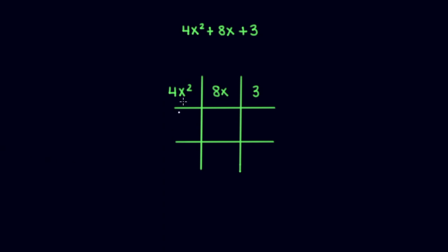we can use the left and right columns to see what values are factors of the top term. For instance, 4x and x are factors of 4x² and 1 and 3 are factors of 3. In fact, the only factors.